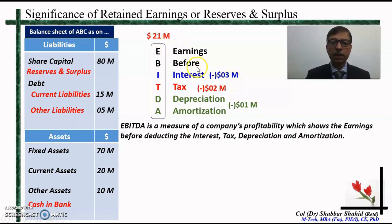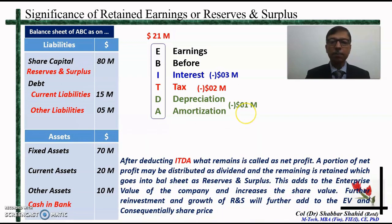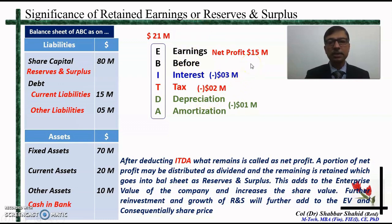So out of this 21 million, 3 plus 2 is 5, plus 1 is 6 million, which has gone towards payment of interest, tax, depreciation, and amortization. What remains after paying this is actually the net profit, or the net earnings of the company. After deducting this, 15 million is the net profit of the company.